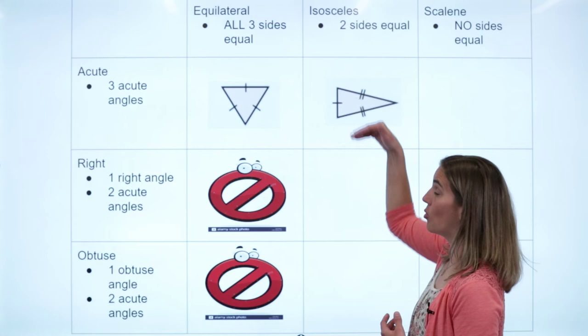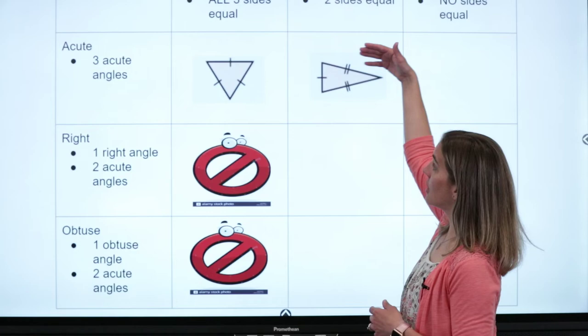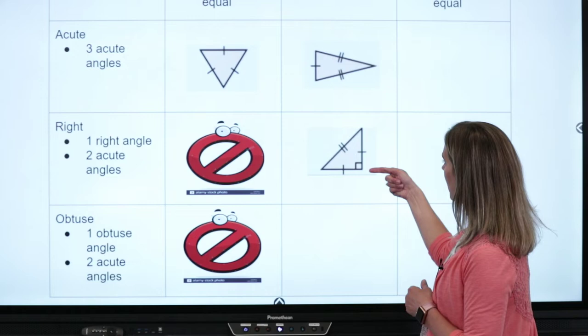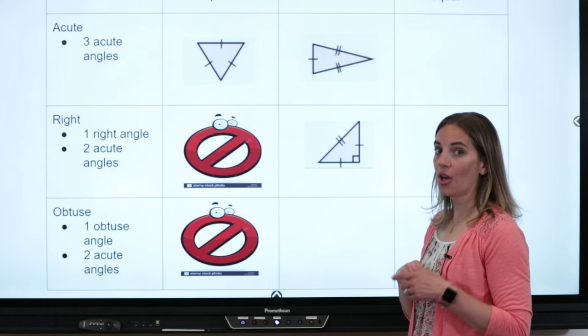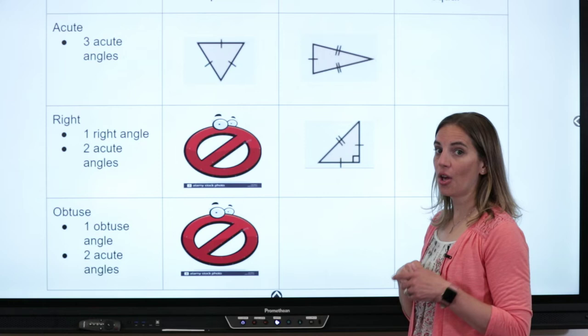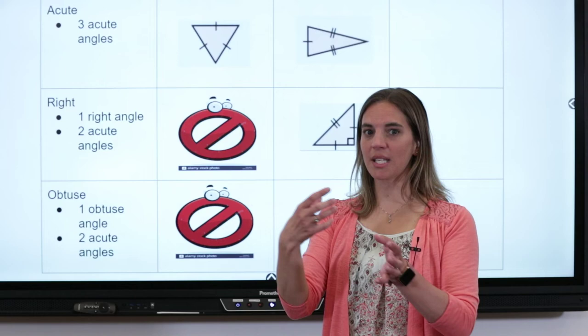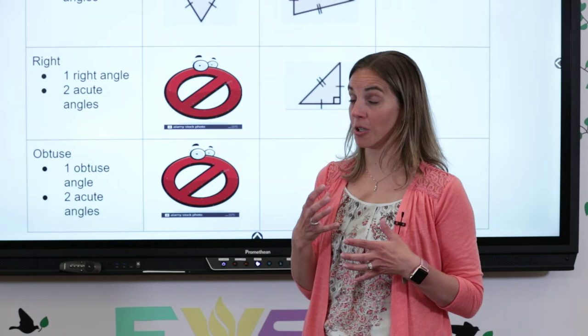Let's think about isosceles. Here's an isosceles triangle — two sides the same and one different. All three angles are acute, so yes, we can make an isosceles acute triangle. Now let's think about a right isosceles: there's the little square in the corner showing the right angle, and two acute angles. The tick marks show two sides equal and one different. So this is a right isosceles triangle. When looking at triangles, examine the angles separately from the sides — don't try to put them all together at once.